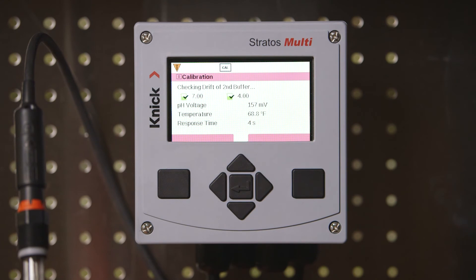As with the first step you can see that the transmitter automatically recognizes the second buffer value, displays the pH voltage, temperature, and response time.